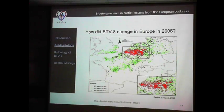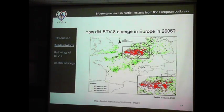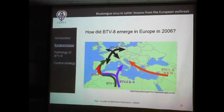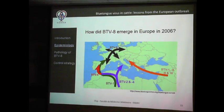It spread so fast for Schmallenberg because of the wind conditions that we couldn't respond in time. We do not know why BTV-8 appeared in northern Europe and didn't just spread from the south. Most BTV serotypes detected in Europe came from the south, mostly from Africa — but not BTV-8. It came out of nowhere, like Schmallenberg.